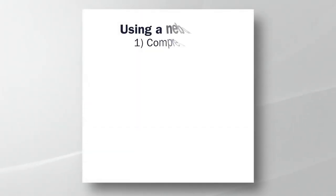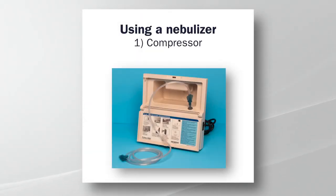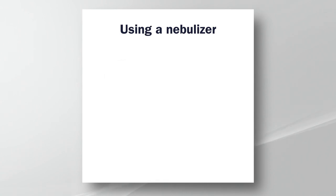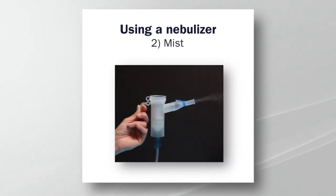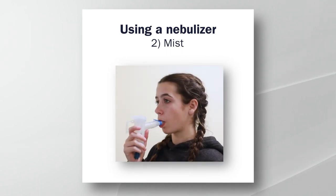A nebulizer and compressor work together to allow certain medications to be converted from a liquid into a mist so that they can be breathed in. A compressor is powered electrically and sends air to the nebulizer chamber. Using the compressed air, the nebulizer converts the liquid medicine into a mist. The mist is then breathed in either with a mask or a mouthpiece.